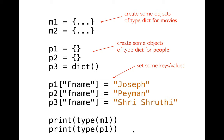People write code this way often enough, but it's kind of confusing. If I'm at the end and I want to figure out what M1 is or what P1 is, and I print the type of both, they'll both say it's a dictionary. So what we want to do is, instead of using dictionaries for everything, create new types for different kinds of information.